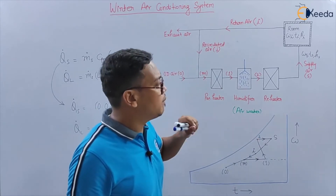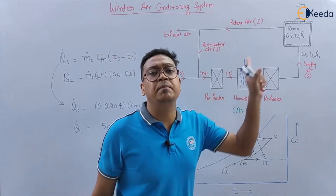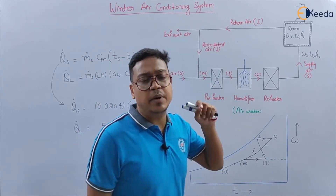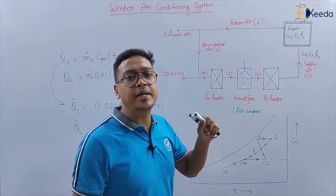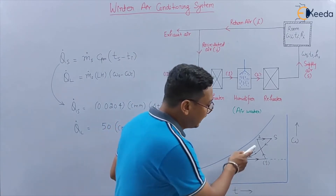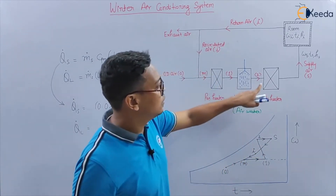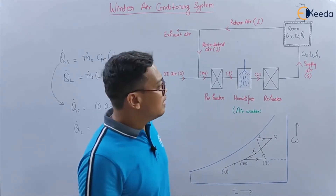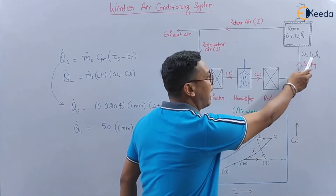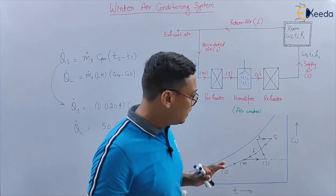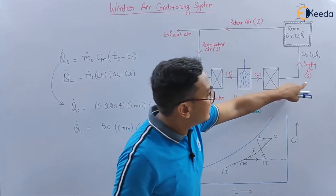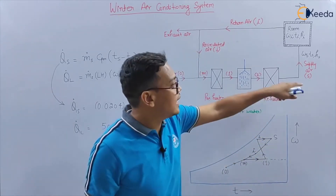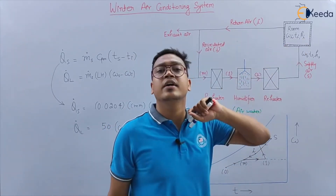At point number 2, the air is again preheated and there is sensible heating — that means heating is done at constant omega, process 2 to S. There is a sensible heating from 2 to S. This is the supply air at the inlet condition, and this air will go to the room or conditioned space.